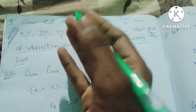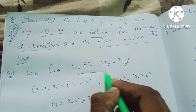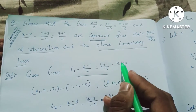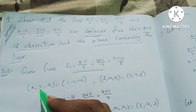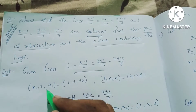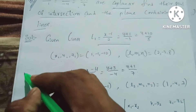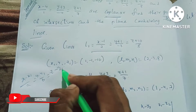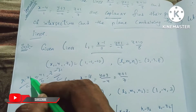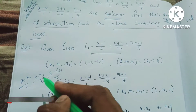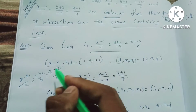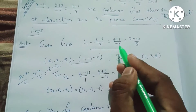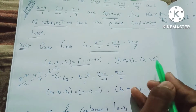Let's look at the first line: (x−1)/2 = (y+1)/(−3) = (z+10)/8. From the standard form (x−x1)/a = (y−y1)/b = (z−z1)/c, we identify x1 = 1, y1 = −1, z1 = −10, and direction ratios a = 2, b = −3, c = 8.